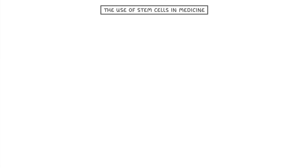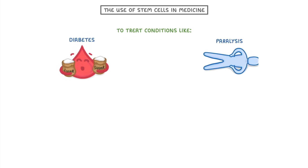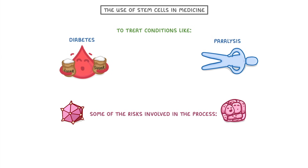In this video we're looking at the use of stem cells in medicine. We'll start by explaining how stem cells can be used to treat conditions like diabetes and paralysis, then we'll look at some of the risks involved in the process, and finally we'll consider the ethical implications and see why some people think that we shouldn't use stem cells in this way.